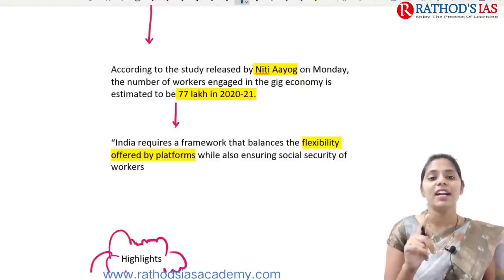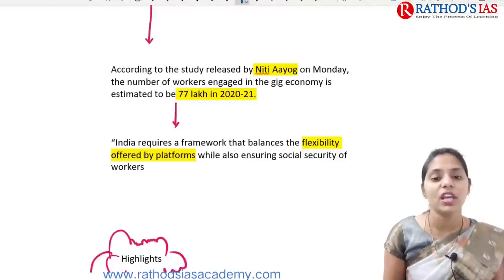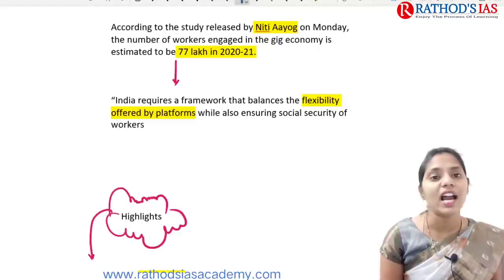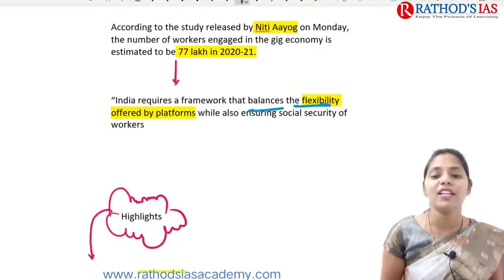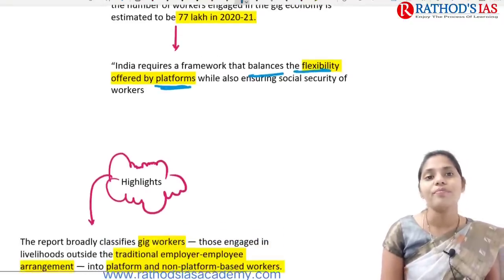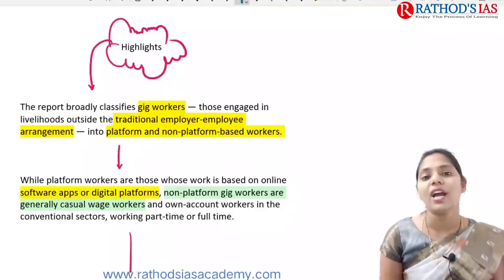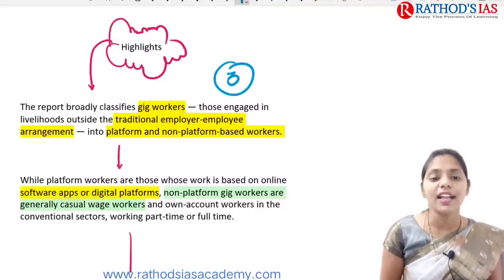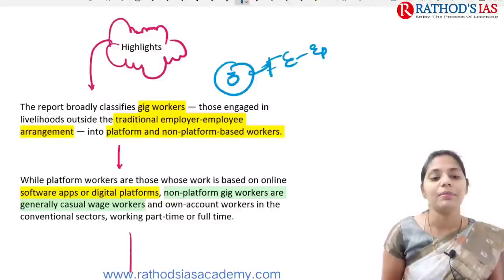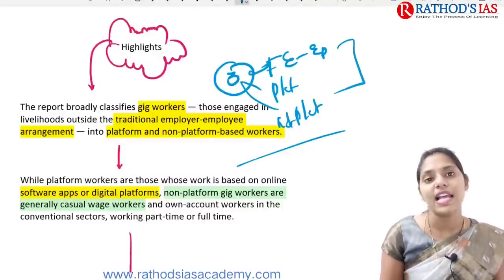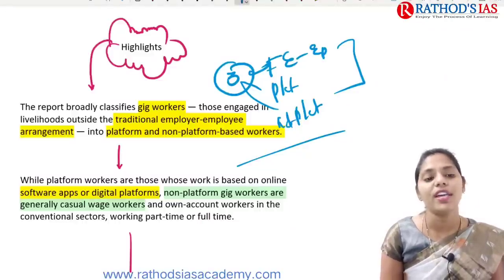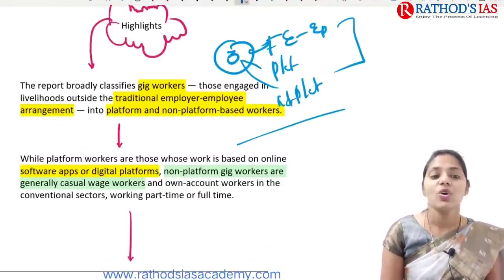According to the study released by NITI Aayog, about 77 lakh people work in the gig economy as per 2020-21 data. India requires a framework to balance the flexibility offered by platforms while providing social security for workers. The report broadly classifies gig workers into: traditional employer-employee arrangement, platform-based workers, and non-platform-based workers.